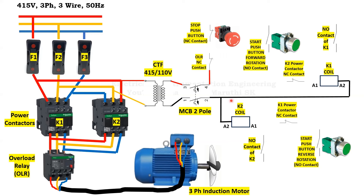After understanding the neutral connection to the K1 and K2 coils, let's see how the phase is connected. The phase is received at the incoming side of the MCB terminal. From the outgoing terminal, phase is extended up to the overload relay NC contact. The overload relay NC contact is connected, and the control supply passes through this NC contact up to the stop push button NC contact — the normally closed contact.